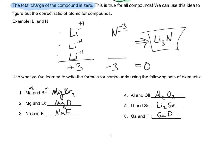Now pause the video, try to figure out the rest of these. I'm going to write down the answers so you can check yourself. Alright, there are the answers — you can check yourself. One thing I forgot to point out is that over on number four, that was a typo — it's not OL, it's just O. So it's aluminum and oxygen.